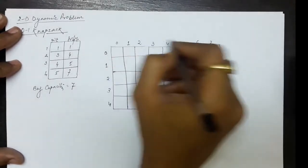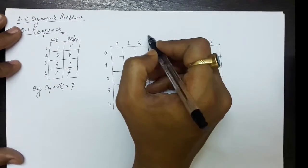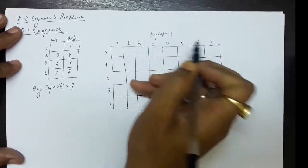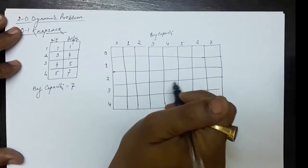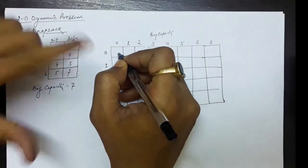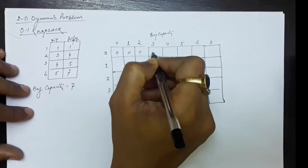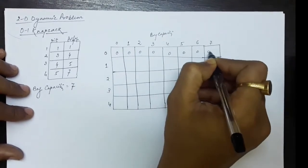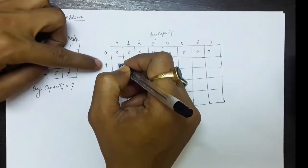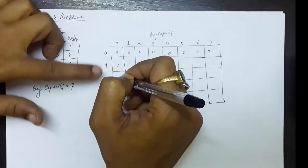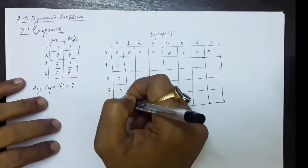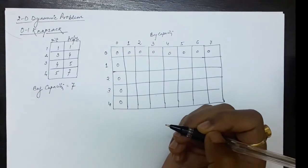On the row side we pick items and on the column side are the bag capacities from 1 to 7. The values written inside each cell represent the profit. If you have no items, regardless of bag capacity you will earn 0 profit. If the bag capacity is 0, even if you have items you will earn 0 profit. So all entries in row 0 and column 0 are initialized to 0.